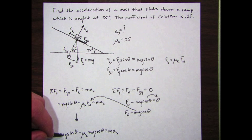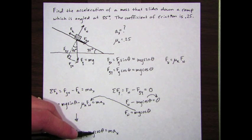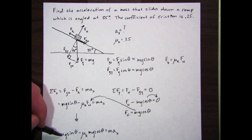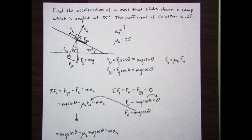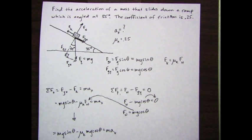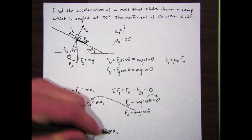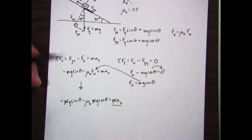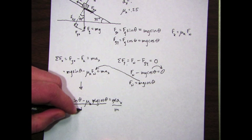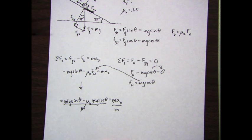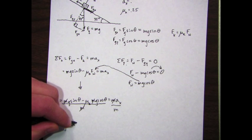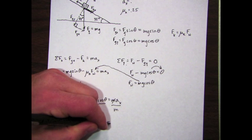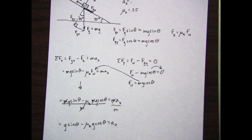Now I look at that. I still don't know m, but look at this: I have m in every single term. I can now cross out all of those m's. I divide both sides by m. If I divide everything by m, that's how the m's go away. So what I'm left with is g sine theta minus mu k times g cosine theta equals a sub x. And now what I can do is plug numbers in.